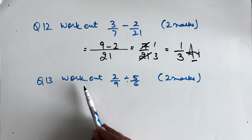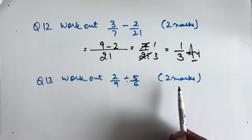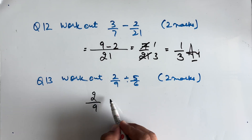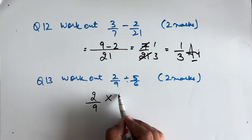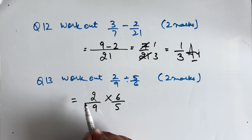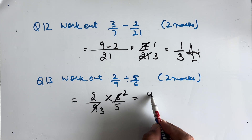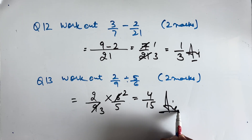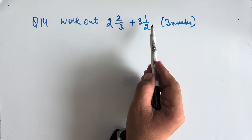Question 13: Work out 2/9 divided by 5/6. This is a 2-mark question. We flip 5/6 and convert division to multiplication: 2/9 × 6/5. Cancelling: 3 twos are 6 and 3 threes are 9, giving us 4/15 as our final answer.